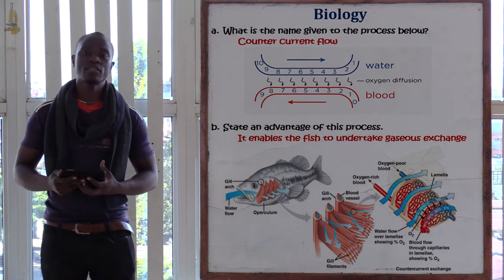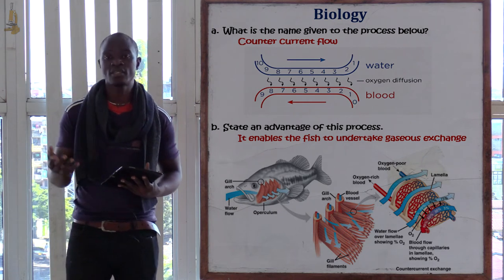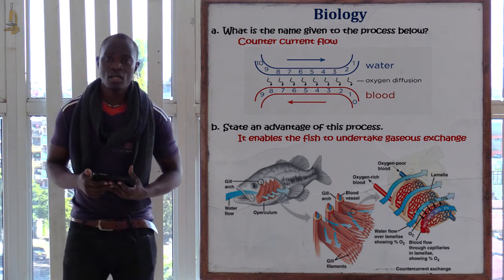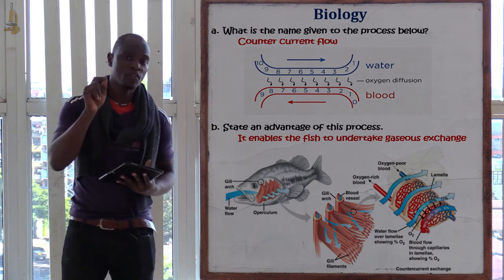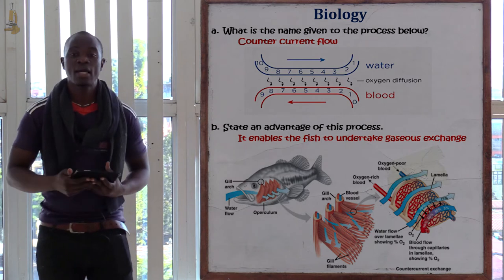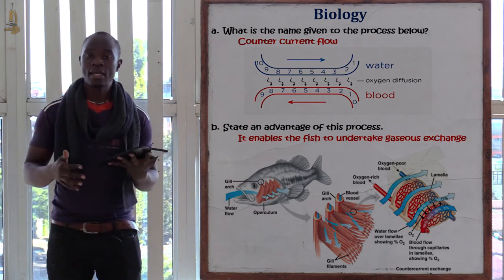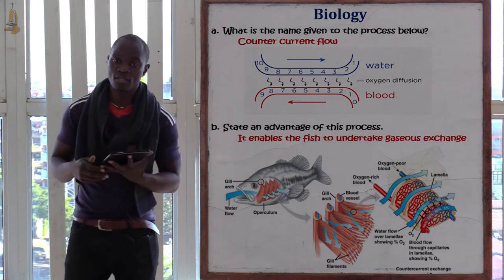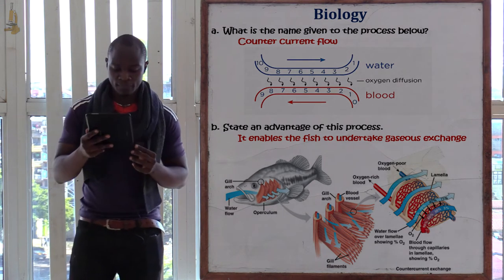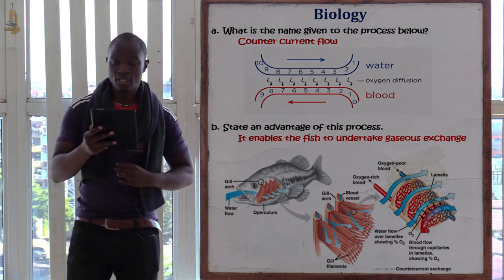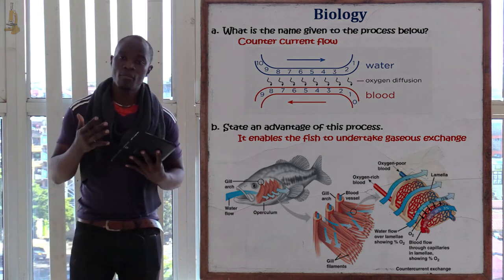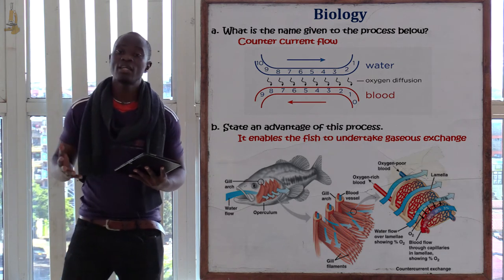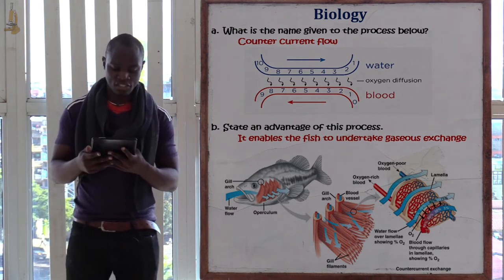Remember the respiratory surfaces: for fish we have the gills, for insects the tracheal system, for humans the alveoli, and for frogs the skin and buccal cavity. The counter current flow of water takes place in the gill filament of the fish. The advantage of this process is that it enables the fish to carry out gaseous exchange.